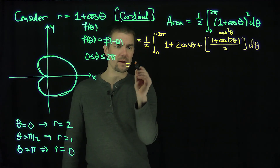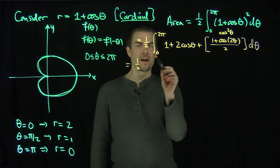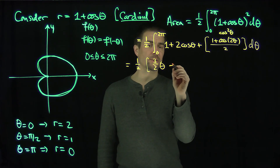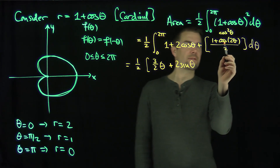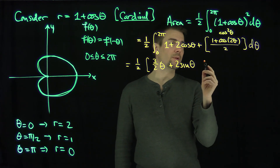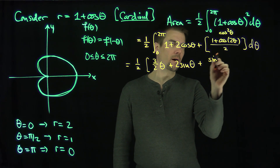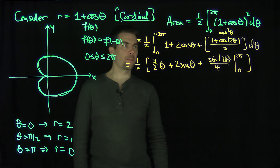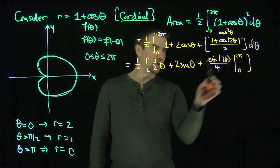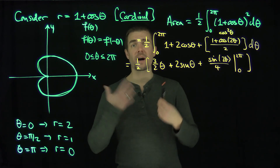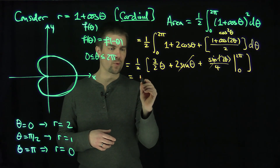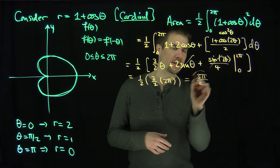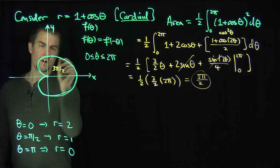Now let's integrate. The constants one and one-half combine to give three-halves. The antiderivative of two cosine theta is two sine theta, and the antiderivative of cosine of 2theta over two is sine of 2theta over four. So we have one half times [three-halves times theta plus two sine theta plus sine of 2theta over four] evaluated from zero to two pi. Plugging in zero gives zero. Plugging in two pi, the sine terms vanish, leaving one half times three-halves times two pi, which gives three pi over two. The area inside this cardioid is three pi over two.